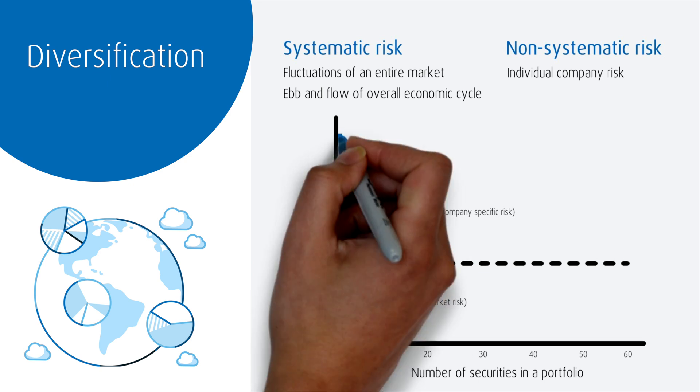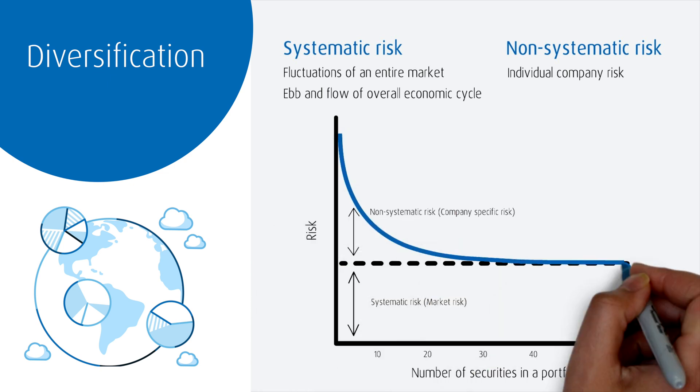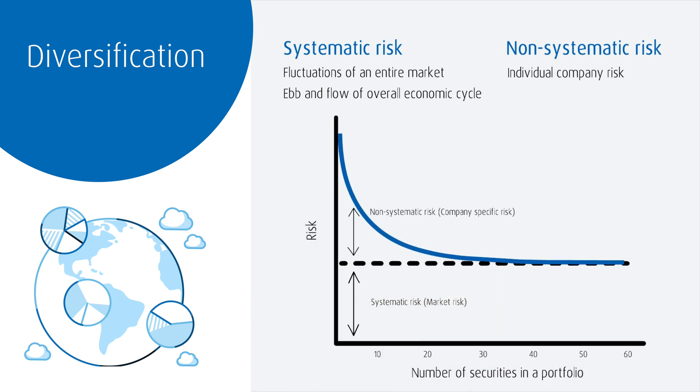It's generally accepted that holding roughly 20 to 30 different securities will minimize non-systematic risk. You could do that by buying 20 to 30 or more individual stocks or bonds, or you could use investment funds like ETFs or mutual funds, which in turn can hold hundreds and sometimes thousands of different individual securities.